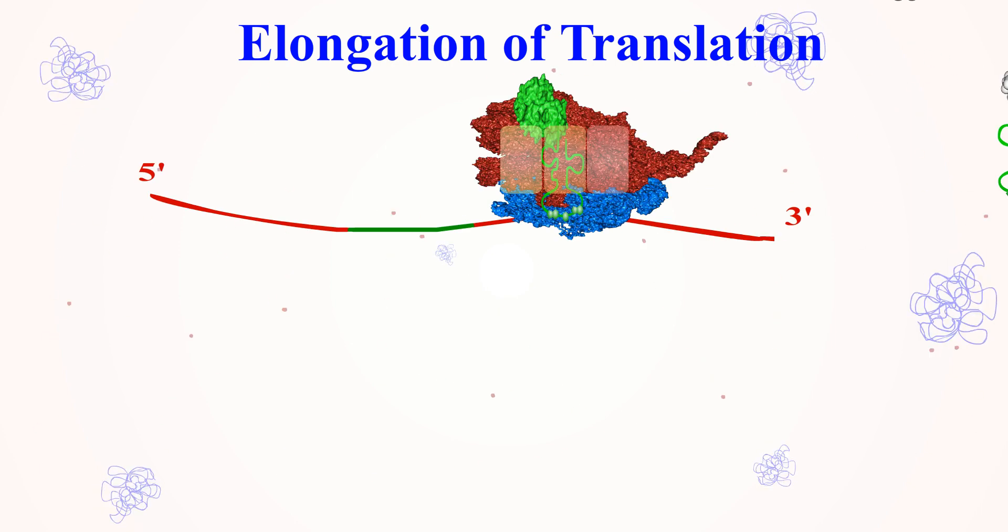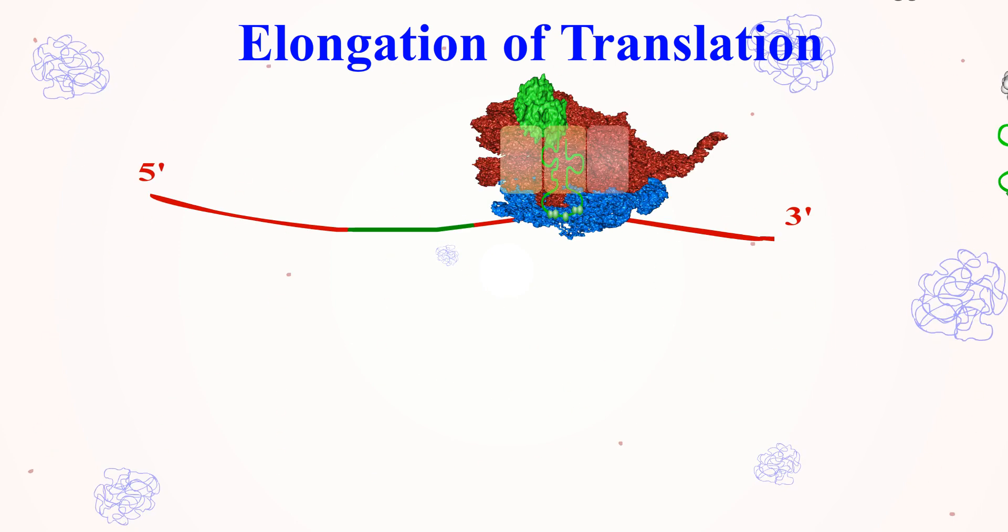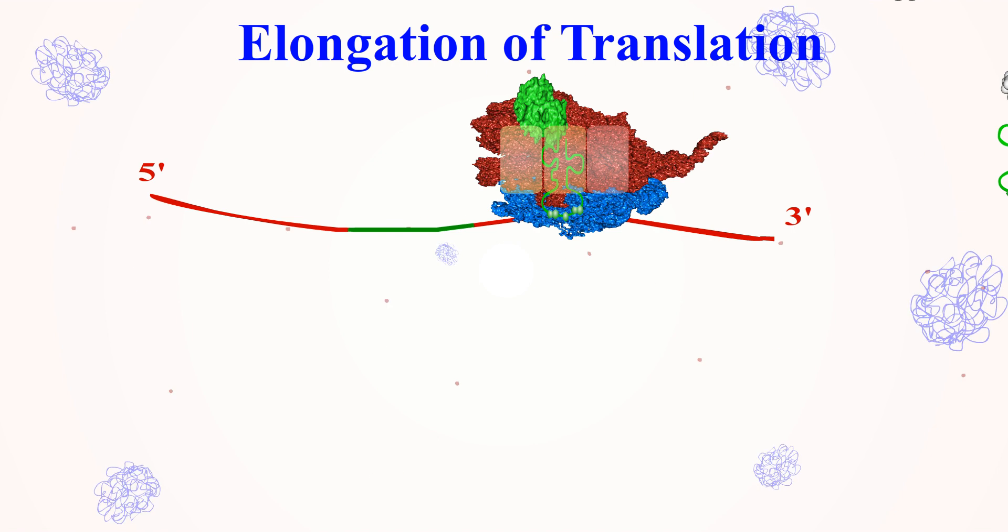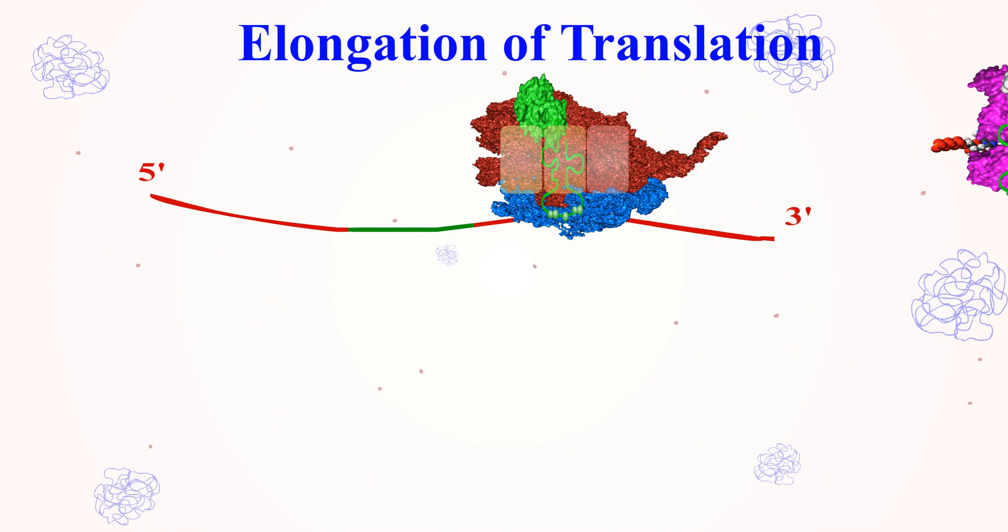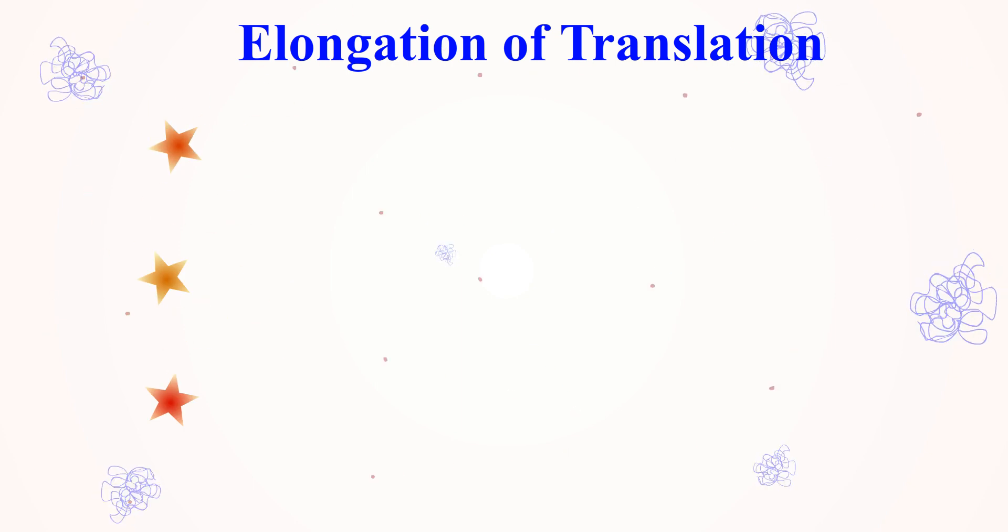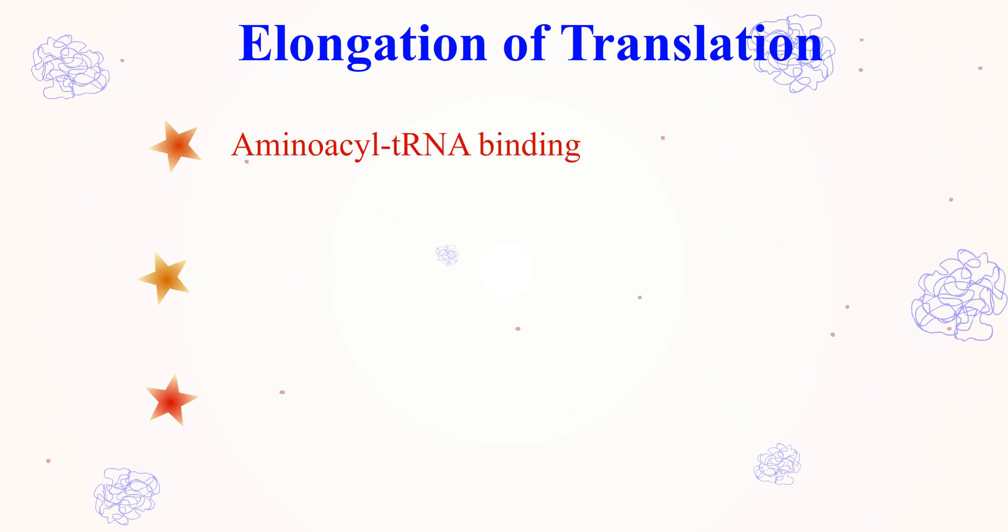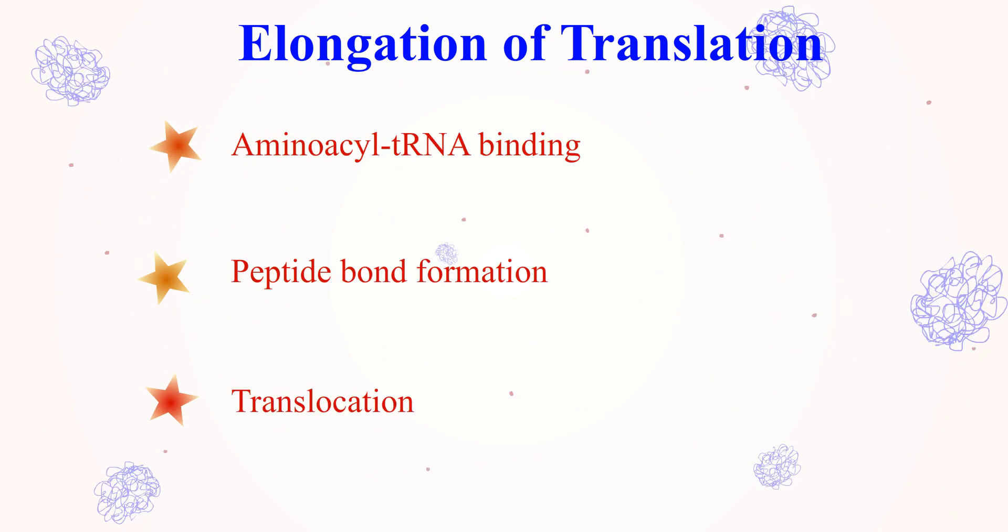Elongation cycle: During elongation, the initiation codon moves to the P-site with fMET-tRNA bound to it through codon-anticodon base pairing, and the next codon is positioned in the A-site. The elongation cycle happens in three steps: aminoacyl-tRNA binding, peptide bond formation, and translocation.